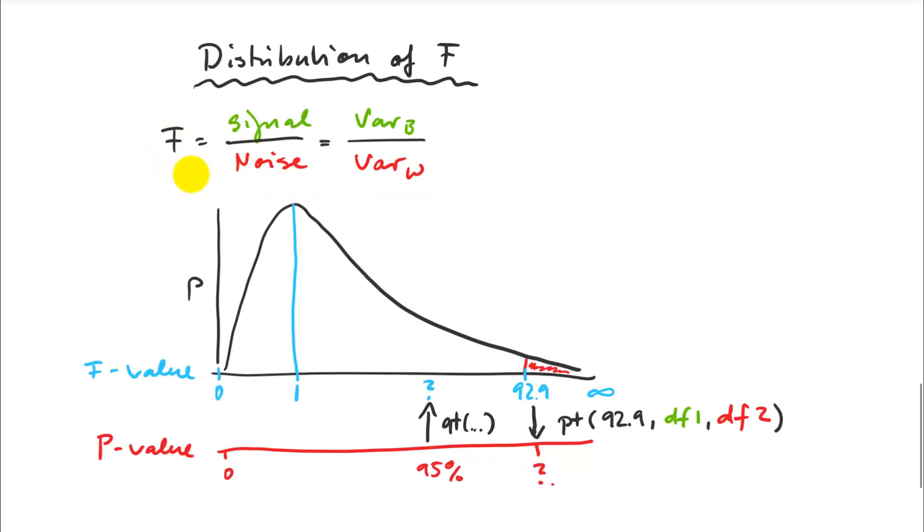Okay, so let's think a moment about our F statistic. We said it's a signal-to-noise ratio, it's variance between divided by variance within treatments. Let's assume for a moment that we have actually no treatment effect, so we are basically sampling three times from the same population.